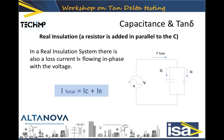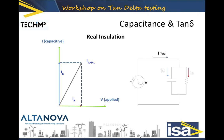Since capacitive and resistive currents are shifted 90 degrees in phase, we use a vectorial sum. We drew IR much larger than it usually is — realistically it would be only a few millimeters on this drawing — in order to make it easier to understand. The resistive current is in phase with the voltage, while the capacitive current leads by 90 degrees. This is how currents and voltages are represented in a real insulation.